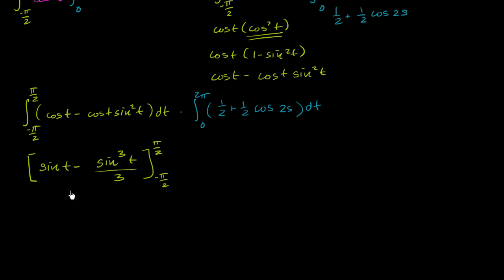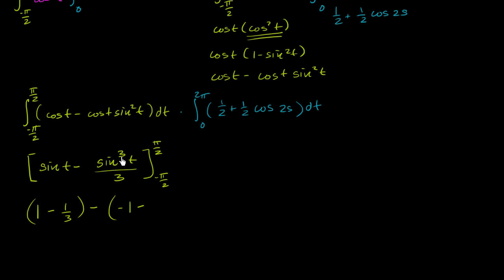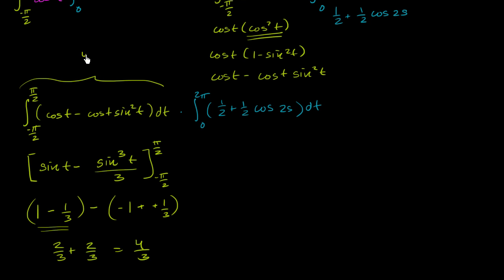Evaluating at pi over 2: sine of pi over 2 is 1, so we get 1 minus 1 over 3, which is 2 thirds. Evaluating at negative pi over 2: sine of negative pi over 2 is negative 1, and negative 1 cubed is negative 1, so we get negative 1 minus negative 1 third, which is negative 2 thirds. Subtracting: 2 thirds minus negative 2 thirds gives 4 thirds. So the t-integral evaluates to 4 thirds.